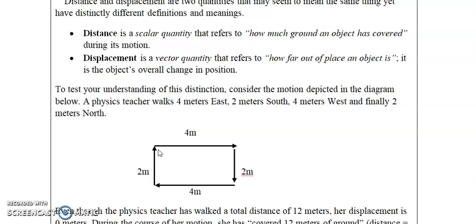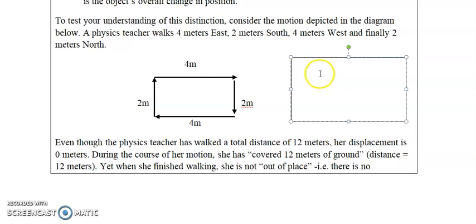Going to the east or right is positive; going down or to the south is negative; going to the left or west is negative; and going up or north is positive. Mathematically, from the starting point: four meters east is positive four, two meters south is minus two, four meters west is minus four.